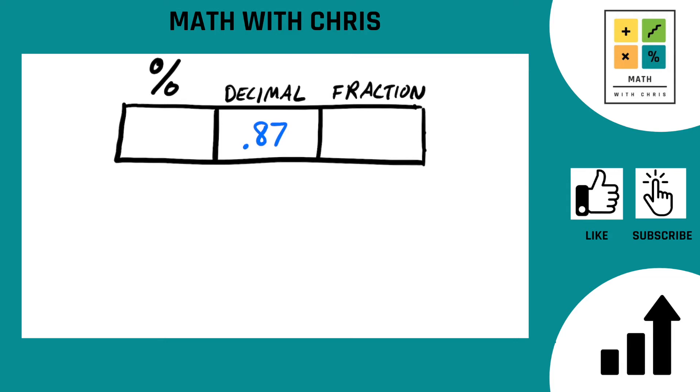To convert a decimal to a percent, we take the decimal 0.87, and very simply in one step, all we do is move the decimal over two spots. One, two, and that gives us 87 decimal point. 87 decimal point is just a whole number, so that's just 87.